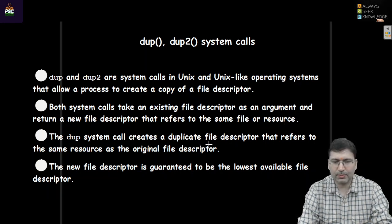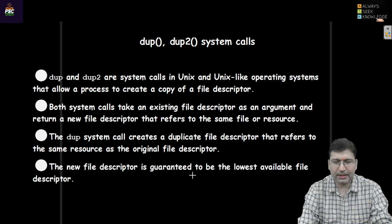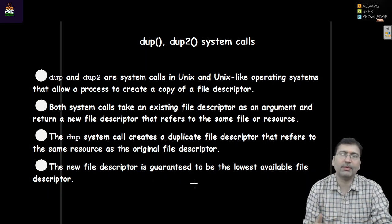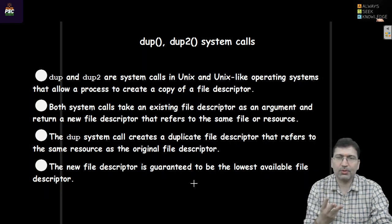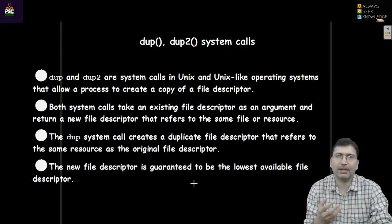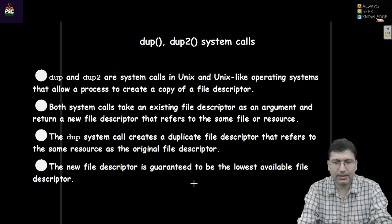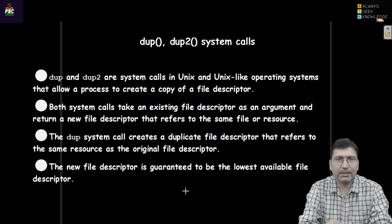The dup system call creates a duplicate file descriptor that refers to the same resource as the original file descriptor. The new file descriptor is guaranteed to be the lowest available file descriptor. In the system, file descriptors start at 0, 1, and 2. Apart from these well-known descriptors, if a process opens any other file, it will get file descriptor value 3, then 4, then 5, and so on.